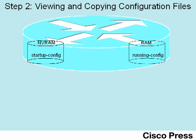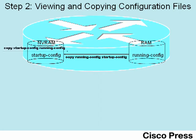Consider the configuration process: when you go into config mode, you add configuration commands and they change the running-config file. However, you want to be ready for the next time the router reboots by having those commands in the startup-config file. To do that, you simply use the copy command — specifically copy running-config startup-config, which can be abbreviated copy run start. That copies the running config over into the startup configuration file and replaces the old startup configuration file.